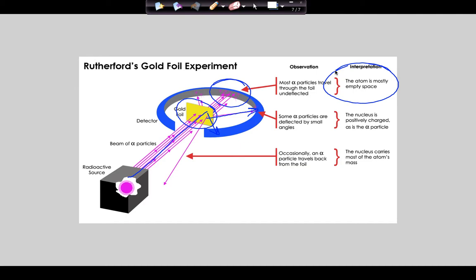What does it mean that most particles go straight through? They're mostly empty space. The reason those alpha particles went straight through is because there's basically nothing inside an atom — if the nucleus is the size of a marble, the atom is the size of a football stadium with nothing in between. What does it mean that some bounced back? They had to hit something — the nucleus — and it was massive. He also found the nucleus was positively charged, because alpha particles have a positive charge, and like charges repel, so the nucleus bent them. Those are the three things Rutherford discovered: atoms are mostly space, and the nucleus is small, dense, and positively charged.